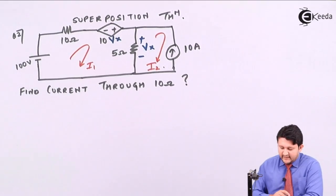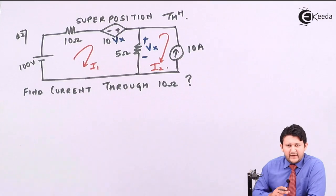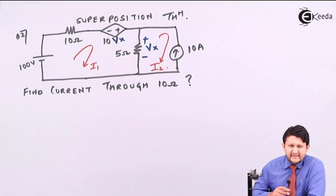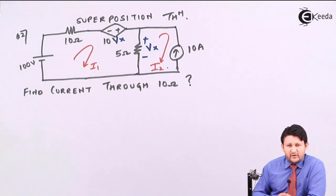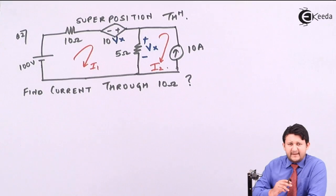If you observe this network, you have only two smaller loops. It looks very simple, and it is very simple. So let's have a look at it.